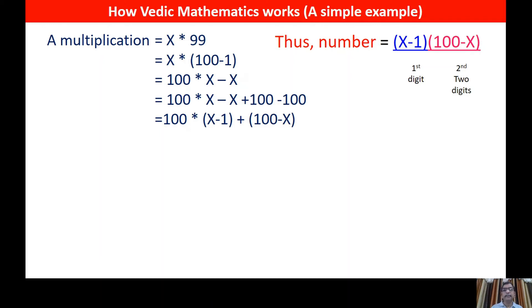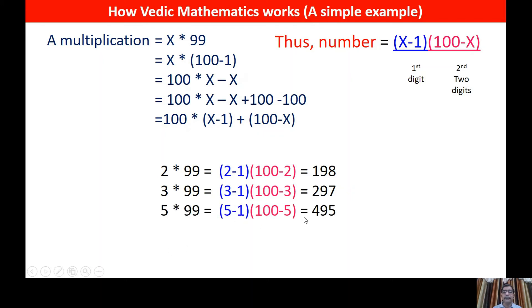So this will be 3 digit number if you apply a single digit number with 99. So if you have examples for this, 2 into 99. So 2 minus 1, 100 minus 2. So 2 is X, X minus 1, the first digit 1. The second 2 digits here, 100 minus X, that means 100 minus 2 is 98. Similarly 3 into 99. 3 minus 1 becomes 2, 100 minus 3 becomes 97. 5 into 99, 5 minus 1, 4, and 100 minus 5, 95. So this is how it is done.